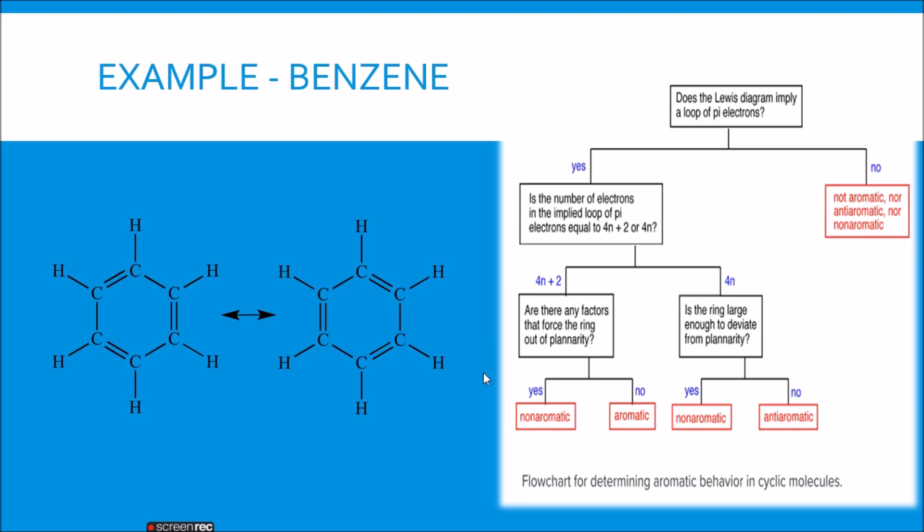Let's go with the first example. I'll take a very simple example, benzene, which you are already aware of. We know that the benzene molecule is cyclic, planar and it obeys all the aromaticity rules and it is aromatic. Let's justify with this flowchart by asking the valid questions to the molecule. The first question is: does the Lewis diagram imply a loop of pi electrons? Yes. In benzene, you can see there is a loop of pi electron because it takes place in resonance. The answer is yes.